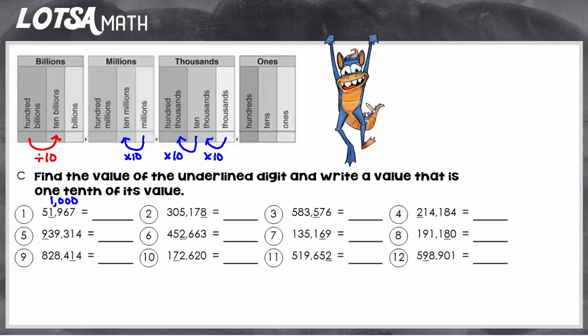So dividing by ten is getting ten times smaller. Another way you can say that is one-tenth. One-tenth and divided by ten mean the same thing. They're both getting ten times smaller.